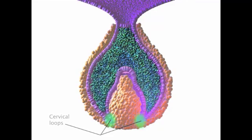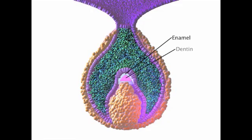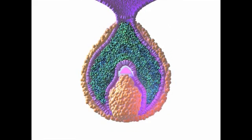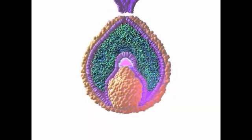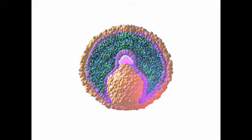The late bell stage involves the production of the tooth's hard tissues. Meanwhile, the dental lamina begins to shrink and eventually breaks away from the tooth bud. The bud is now separated from the epithelium of the oral cavity as the bell stage comes to an end.